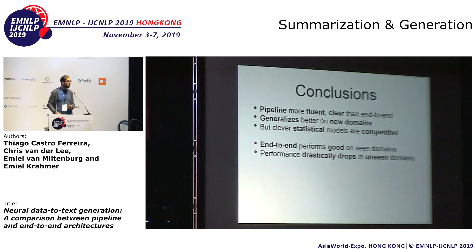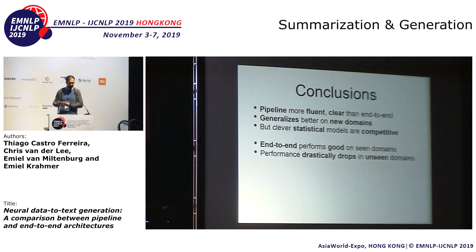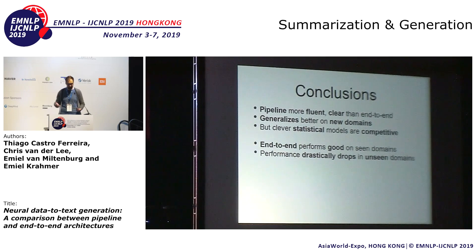In conclusion, we were quite happy with the pipeline approach. We saw that in general it's more fluent and more clear than the end-to-end approach, and it generalizes better to new domains. End-to-end performs pretty well on seen domains but cannot generalize as well as the pipeline architectures. There is a note though: we also had some smart statistical baselines that were also pretty competitive. They were not as good, but they also achieved good scores. So it seems this is not a solved case yet at all.